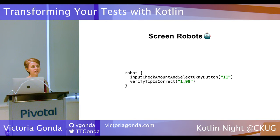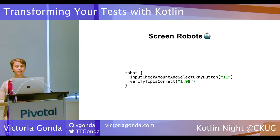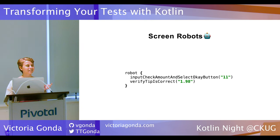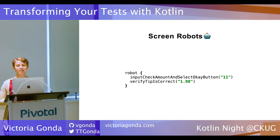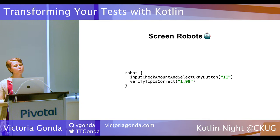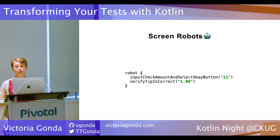Here's an example for a tip calculator. We have a calculator screen robot that extends from a screen robot class with some additional helpers. We put two functions on it: 'verify tip is correct', which checks that the field displays the correct tip, and 'input check amount and select OK button', which inputs an amount into a field and clicks a button. However, calling it with 'with robot' and chaining methods isn't very Kotlin-y — it's not using higher order functions. A better solution uses a higher order function with a receiver type, giving us a 'robot' function where we pass a block and chain our actions and verifications.